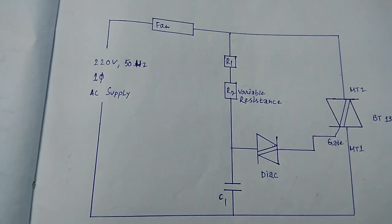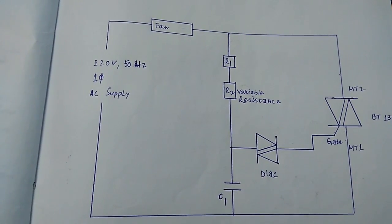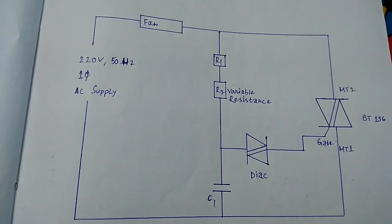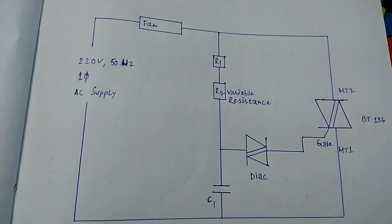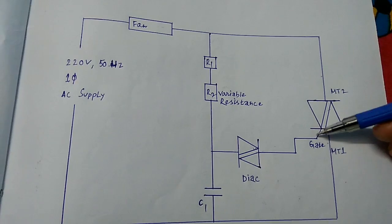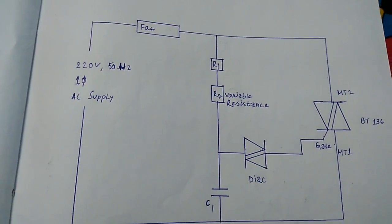TRIAC is also a four layer, three terminal semiconductor device. It has three electrodes: this is an electrode, this is an electrode, and this is a gate.